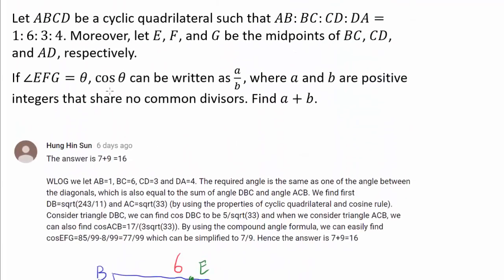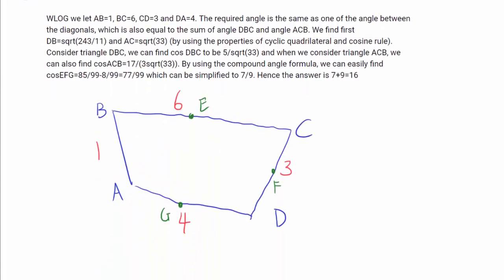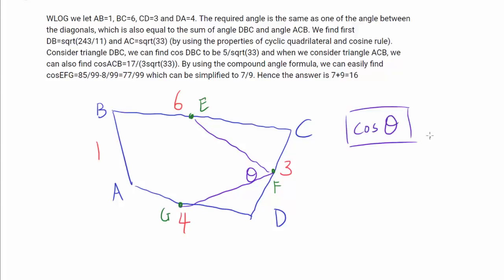What do we want to find? Letting the angle EFG be theta, we want to find the cosine of theta. It can be written as A over B, and we wish to find A plus B if A over B is an irreducible fraction. So our final answer should be cosine of theta.